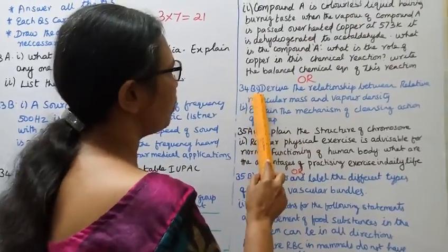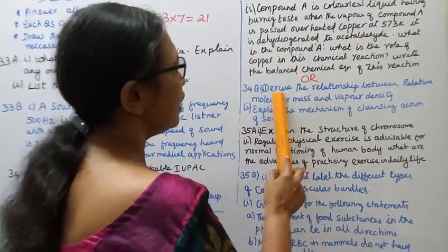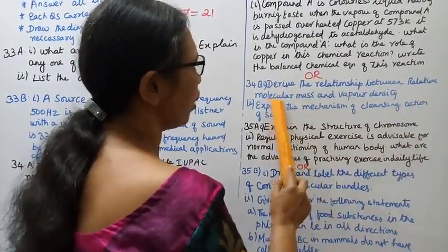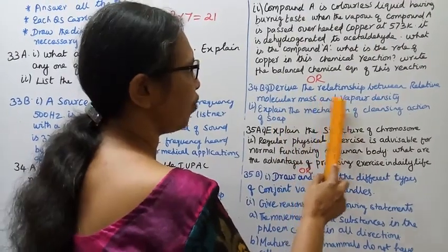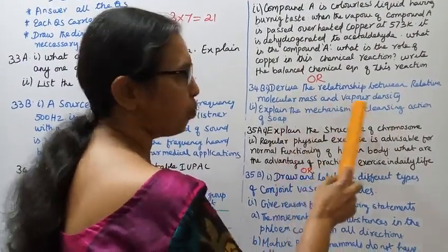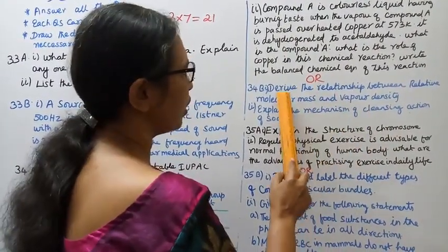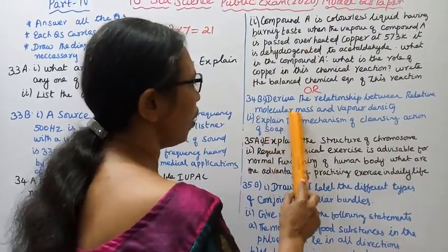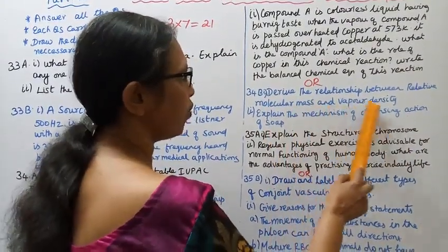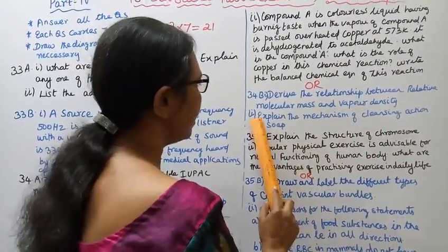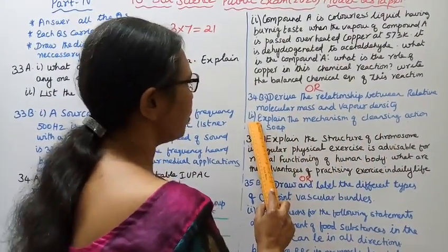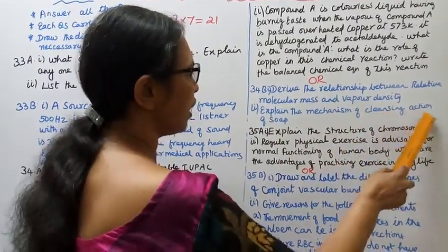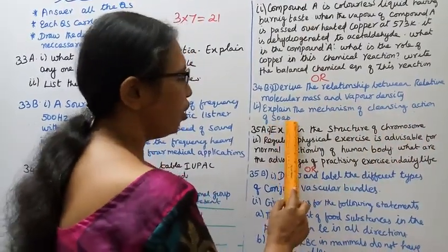Question 34B, first subdivision: Derive the relationship between relative molecular mass and vapor density — this is a very important question. Second subdivision: Explain the mechanism of cleansing action of soap.